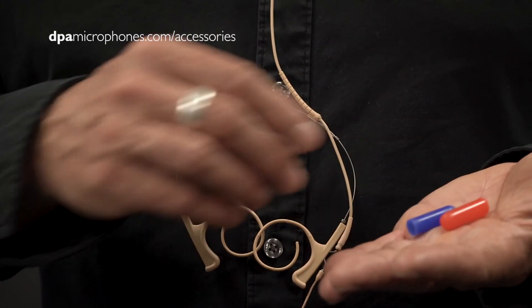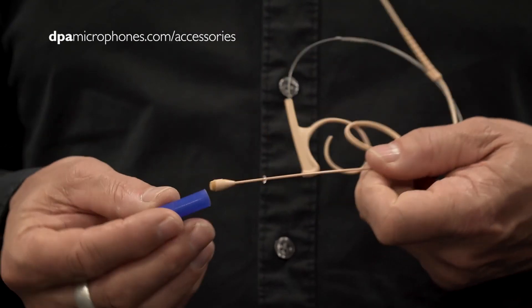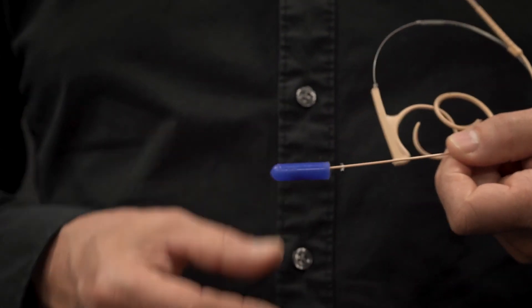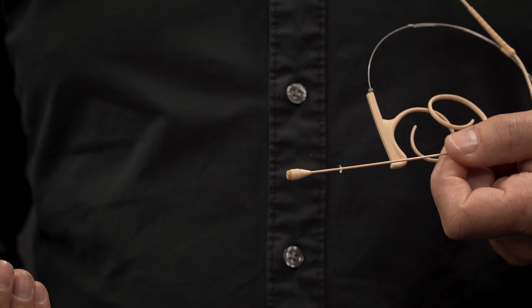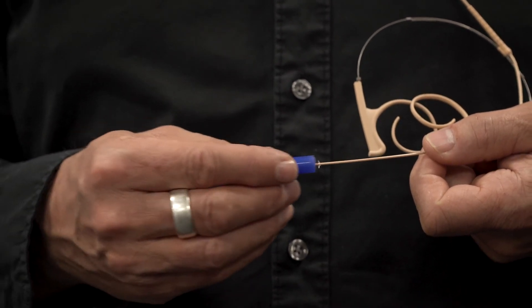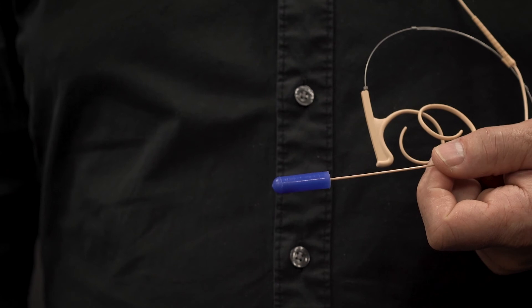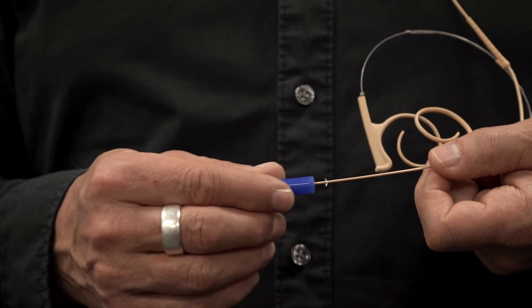With each of the headsets, we supply a makeup cover that you use to cover the capsule of the microphone if you are applying hair spray or makeup to the actor while wearing the microphone. Make sure you remove this makeup cover before entering the stage.